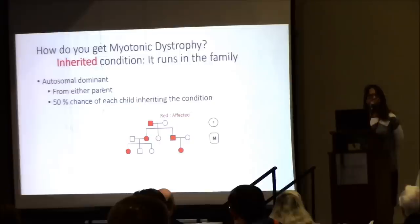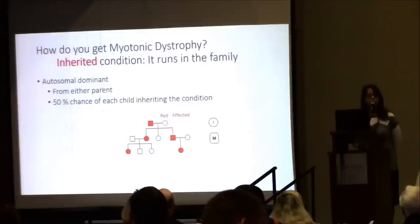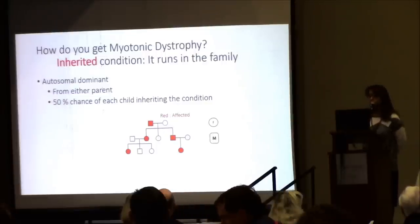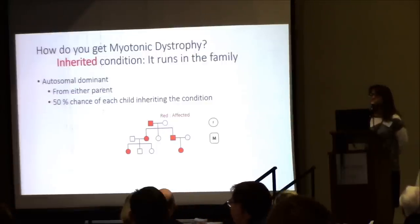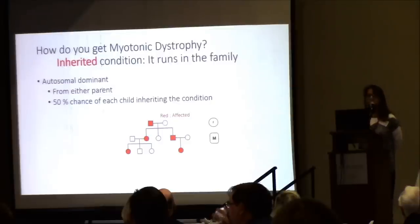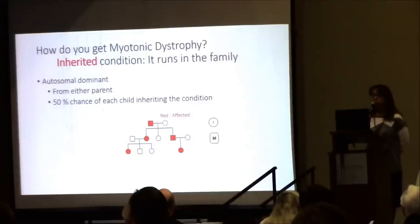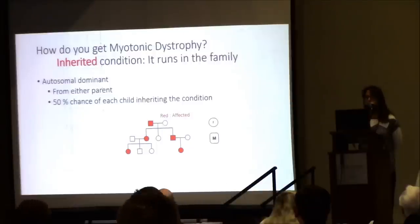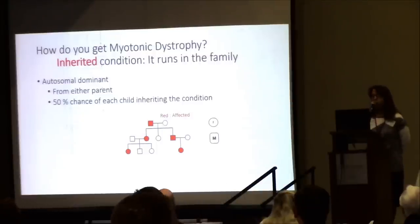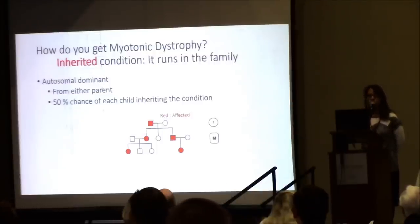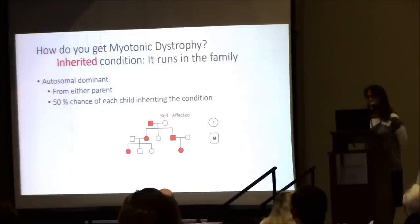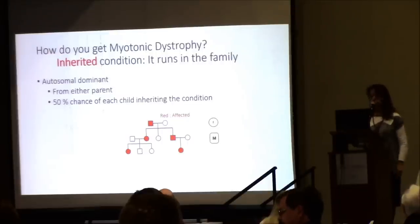Myotonic dystrophy is an inherited condition — it runs in families — and it's considered autosomal dominant, meaning you inherit this condition from one parent. Both parents don't need to have it to pass it on. Each child of an affected person has a 50% chance of getting myotonic dystrophy. In a family tree or pedigree, circles represent females and squares represent males. In an autosomal dominant pattern, someone is affected in each generation.